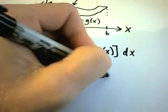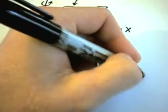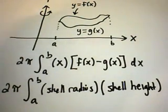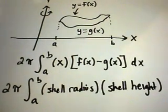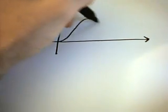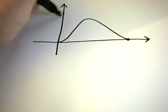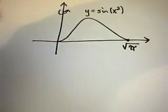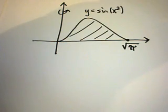You'll see what I mean by shell radius and shell height in the next few examples. This is the basic formula when you're rotating about the y-axis. For our first example, suppose we have a graph that goes up and comes back down — we're going to rotate this region about the y-axis. The function is sine of x², and the right x-coordinate is √π.